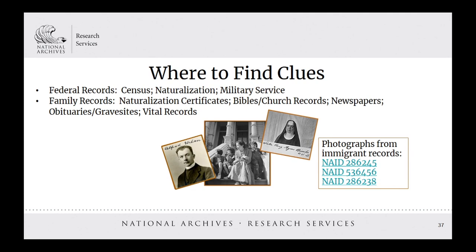Jumping-off points for your immigrant ancestor research can show up in lots of places — from federal records like census, naturalization, and military service, to family records like naturalization certificates, Bibles and church records, newspapers, obituaries and grave sites, and even vital records. You really have to take time to consider what you can do with the information you find, because even small details can set you on a path.